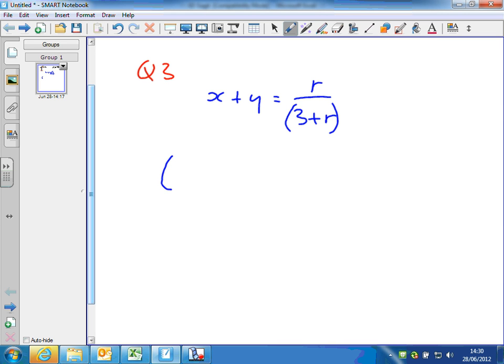You get x plus y times 3 plus r equals r. It's important to put a bracket round the x plus y because you're multiplying that whole term x plus y by that whole term 3 plus r.